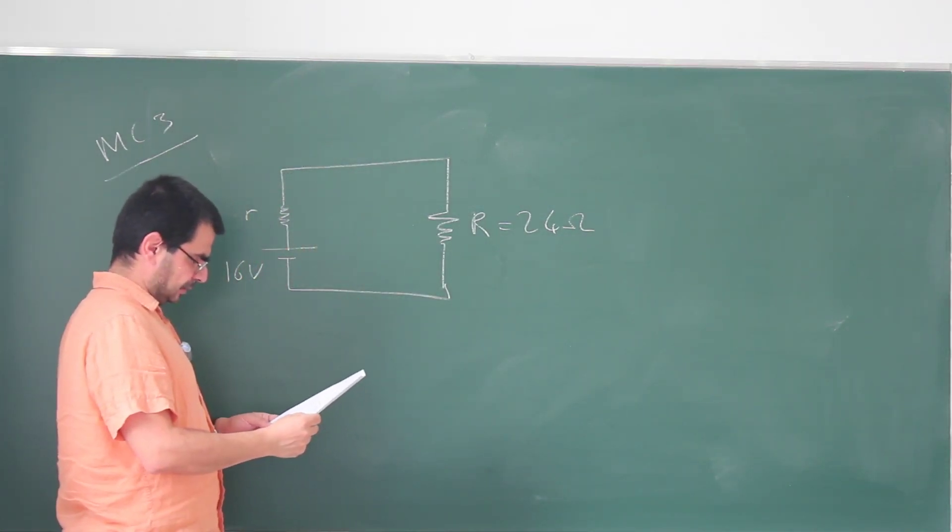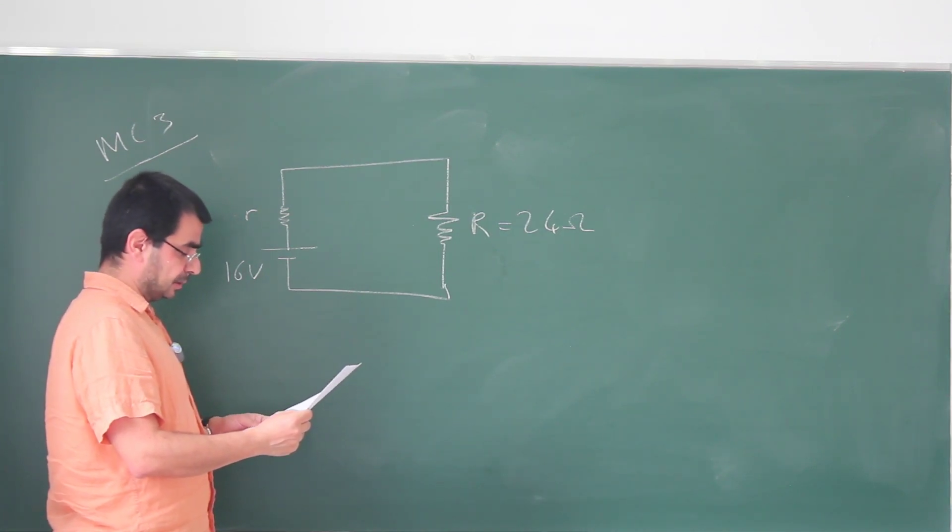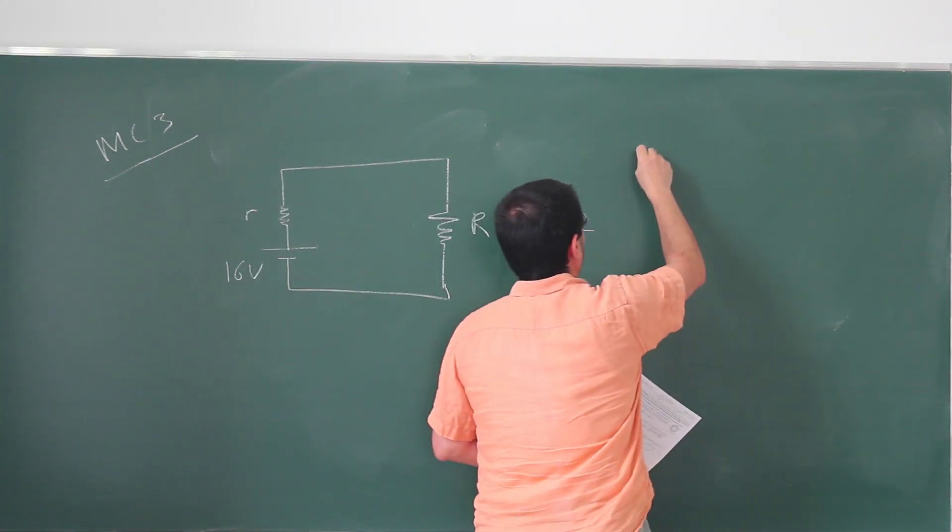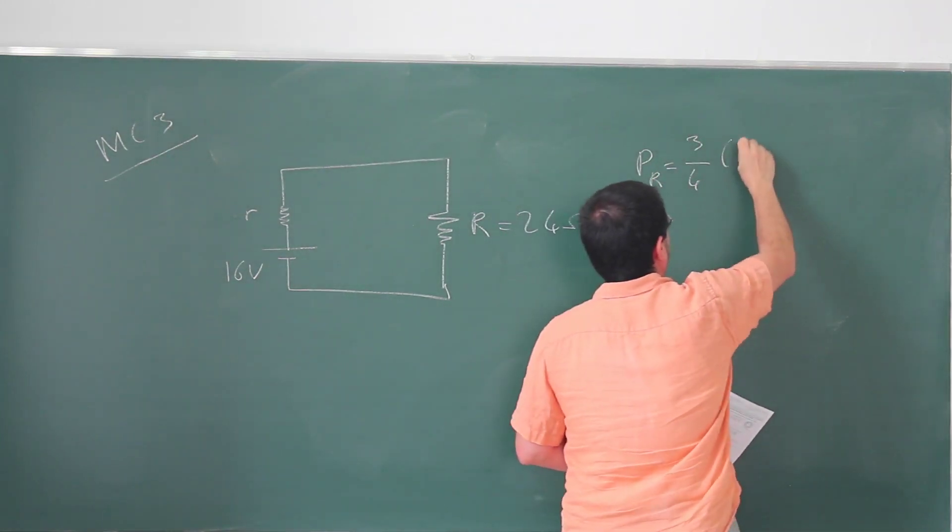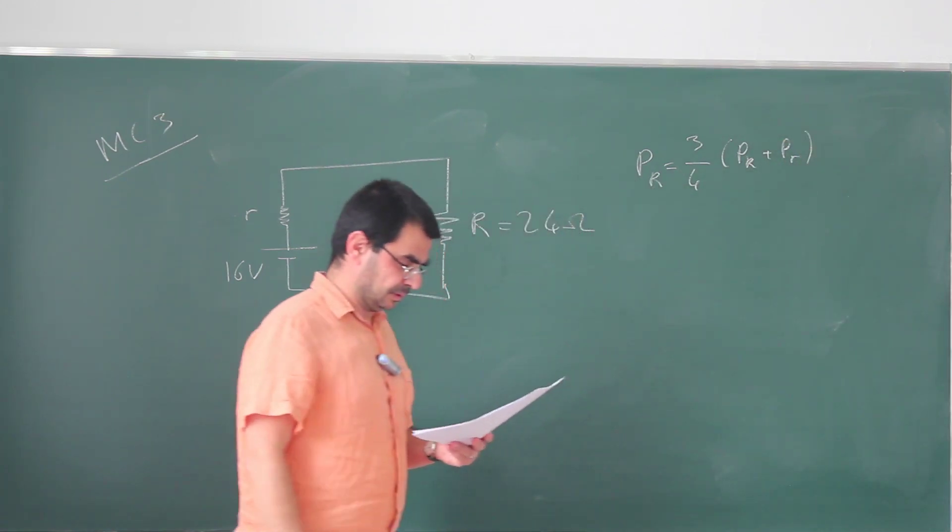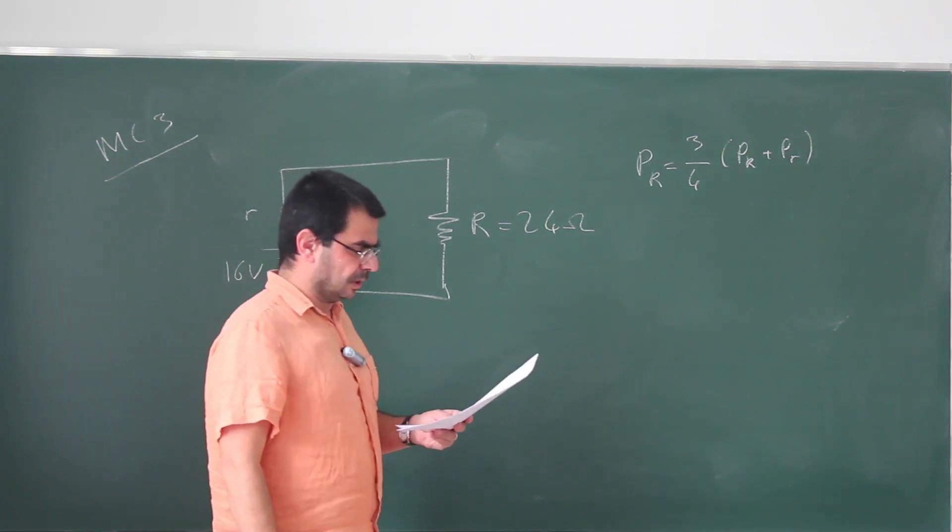We are told that the power dissipating the external resistance R is three-quarters of the total power dissipated in the circuit. So P_R is three-quarters of P_R plus P_r, the total power dissipated in the circuit. What's the total power dissipated by two resistors R and r in the circuit?